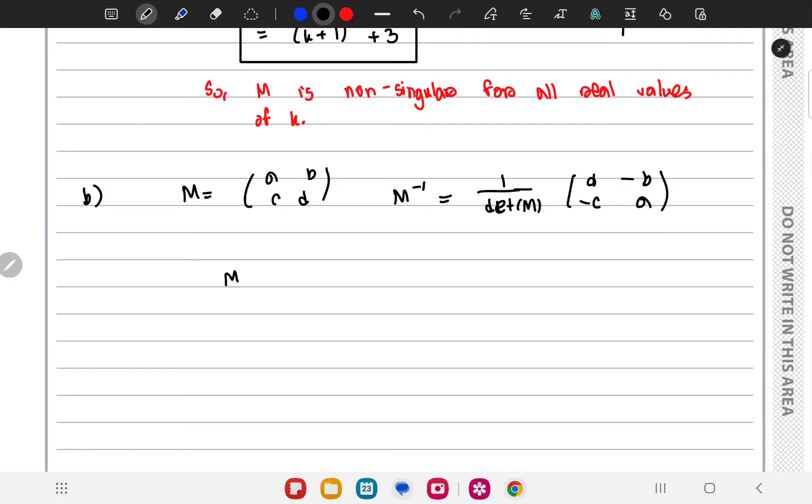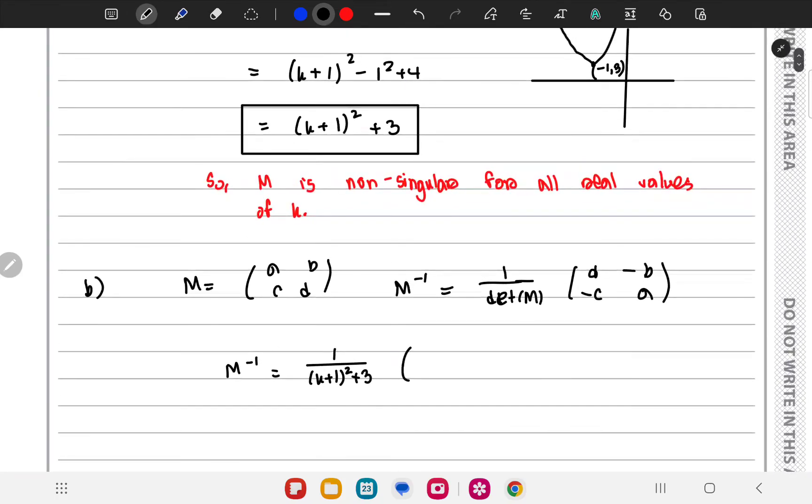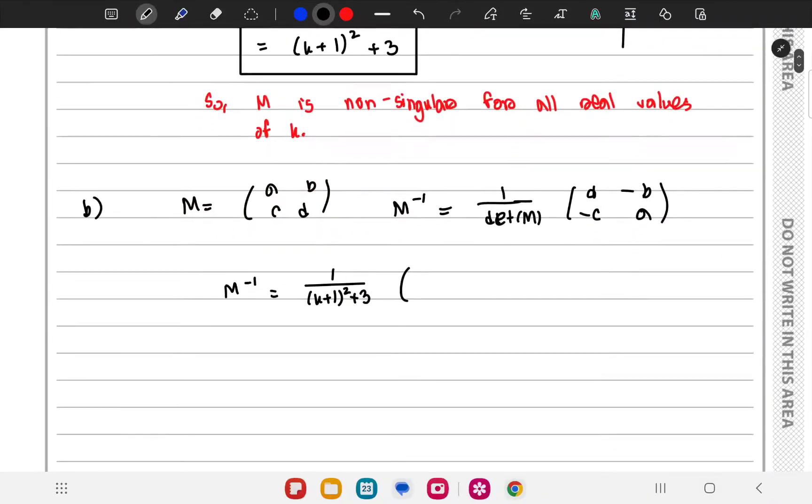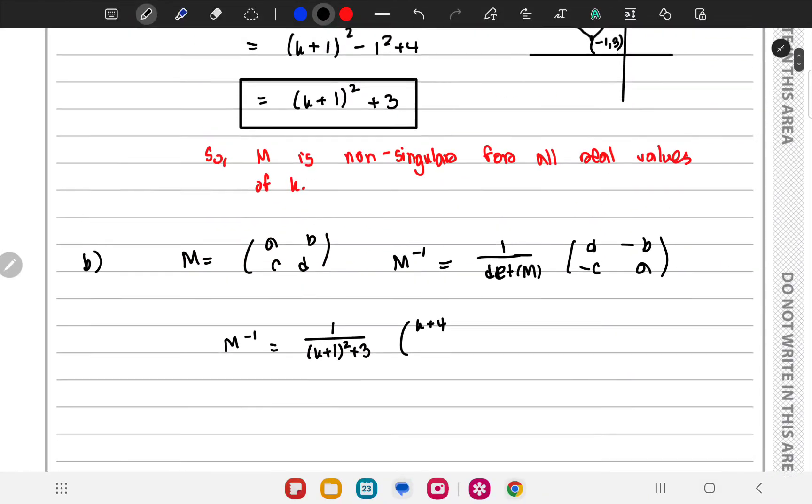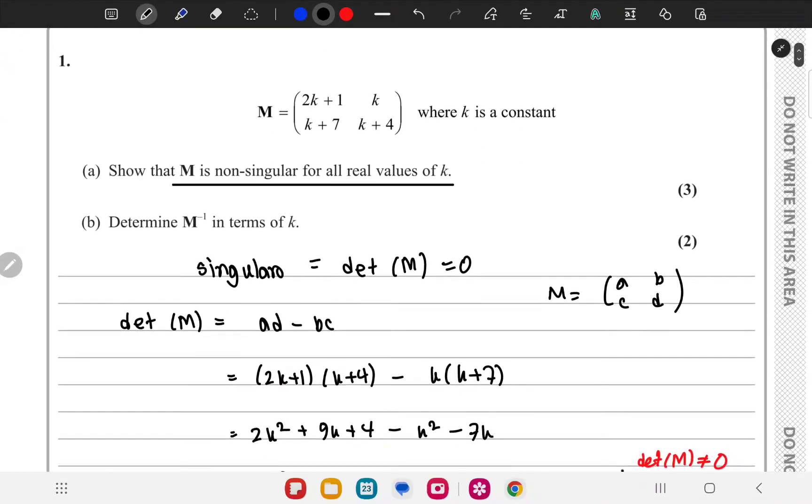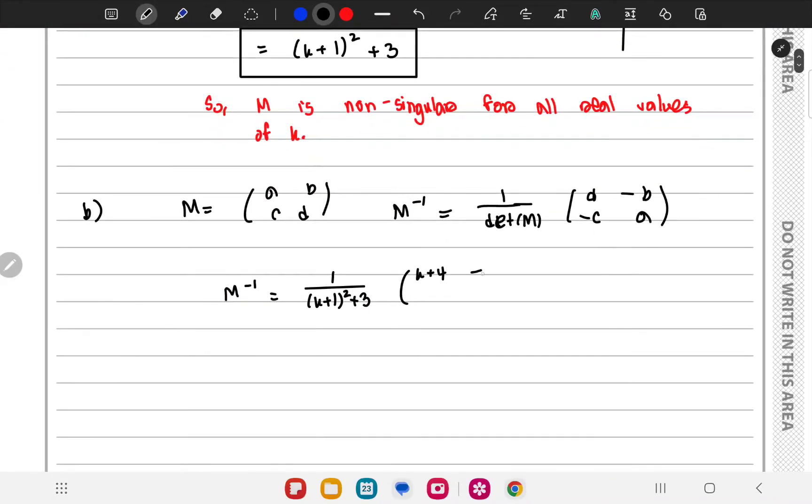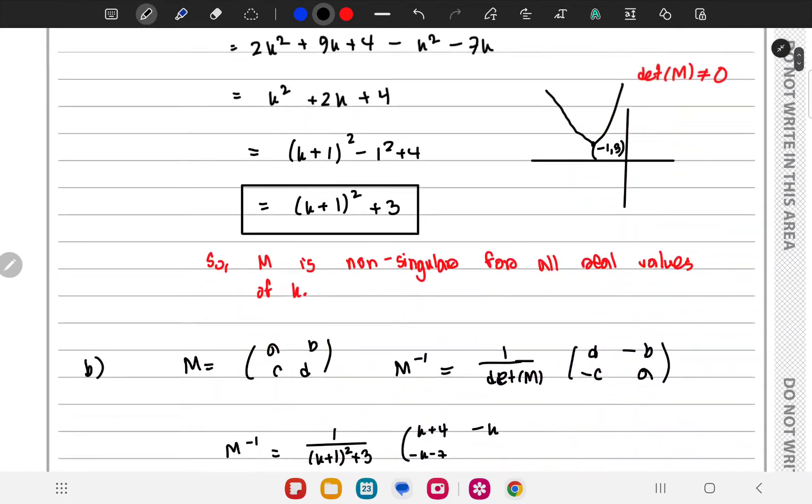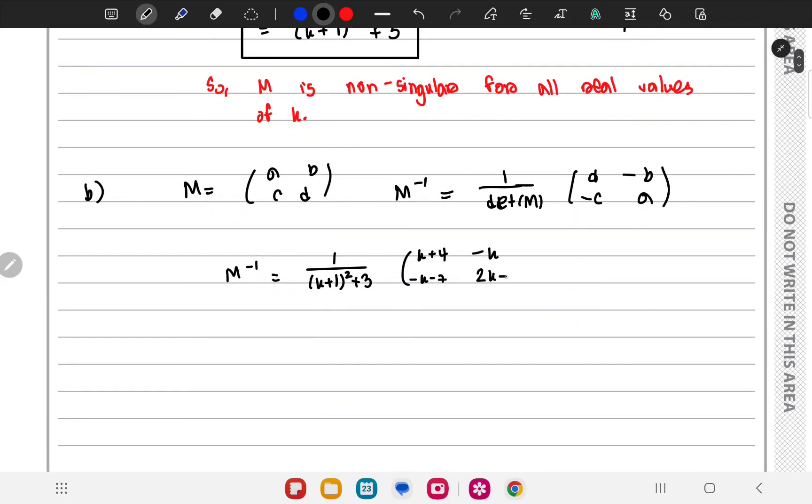So for this case M inverse would be 1 by K plus 1 whole square plus 3 times K plus 4 would be here. Minus K, minus K, minus K minus 7, and 2K plus 1 over here.